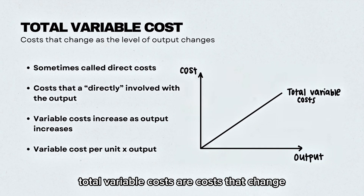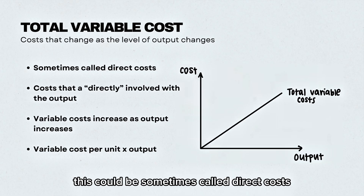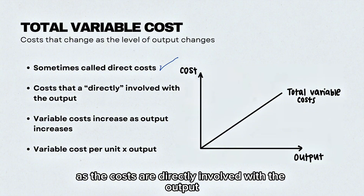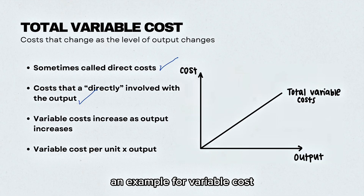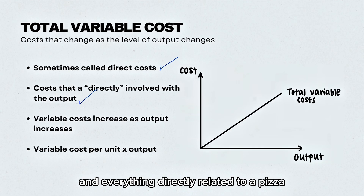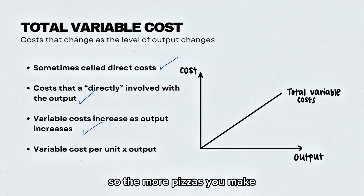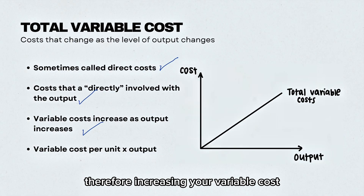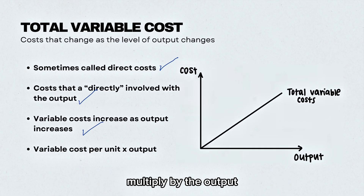Total variable costs are costs that change as the level of output changes. These can sometimes be called direct costs, as they are directly involved with the output. An example for variable costs for a pizza would be the bread, cheese, peppers, and everything directly related to a pizza. Variable costs increase as output increases — the more pizzas you make, the more materials are required, therefore increasing variable costs. The calculation is variable cost per unit multiplied by the output.